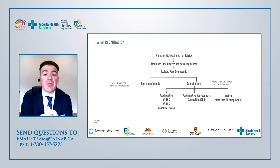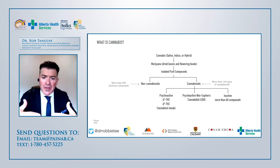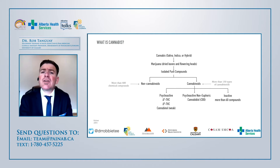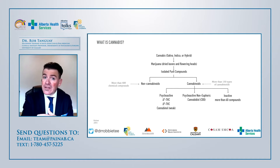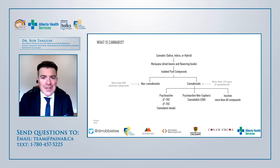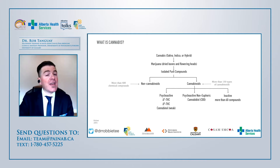Marijuana is a term representing dried leaves and flowering heads. When we isolate pure compounds, we look at non-cannabinoids and cannabinoids. Previously, the focus was really on THC and how much THC you could pack in. Now we look a lot at THC — the psychoactive component — and CBD, which is not really psychoactive in a euphoric sense, but has strong anxiolytic, antipsychotic, and anti-inflammatory properties. There are now more than 130 other cannabinoids we don't know a lot about, such as CBC and CBN.